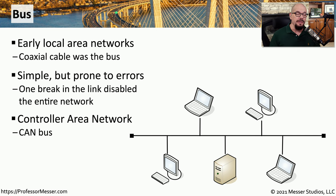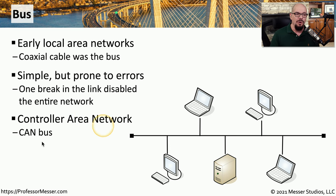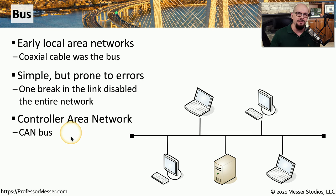In our modern automobiles, we have bus networks that we use extensively. These are controller area network buses, or CAN bus connections. And they're used to connect all of the different sensors and controllers inside of our automobiles to make all of our cars much safer to drive on the roads.